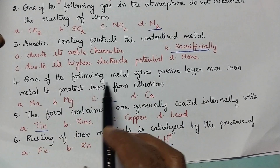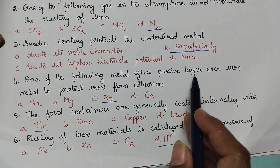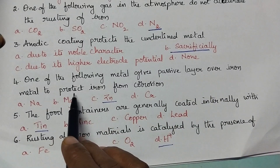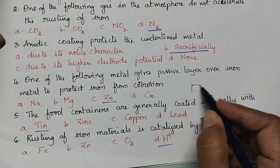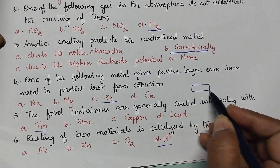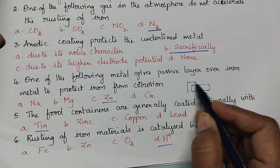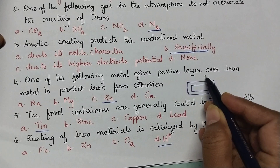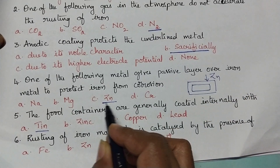One of the following metals gives a passive layer over iron metal to protect iron from corrosion. In order to protect iron from corrosion, if the coating is given with zinc metal, then it will act as a passive layer. So zinc is the right option.